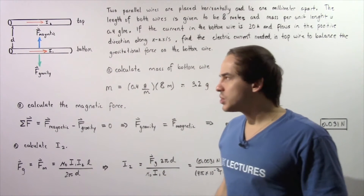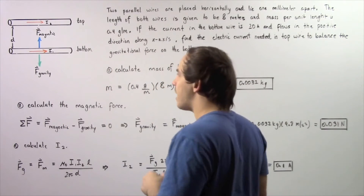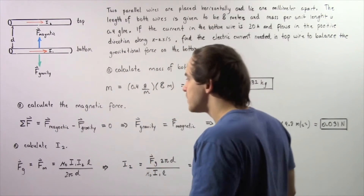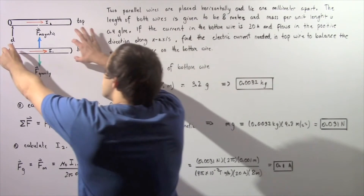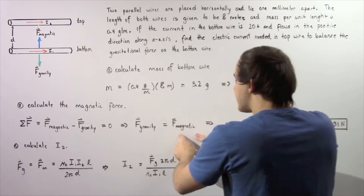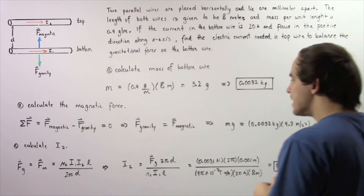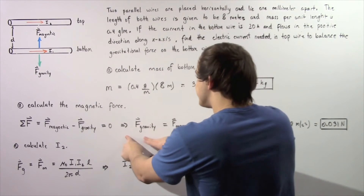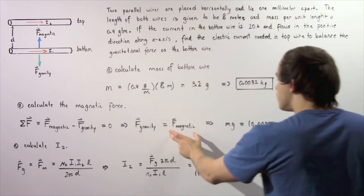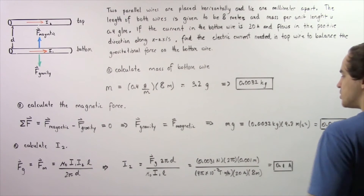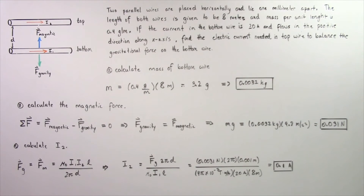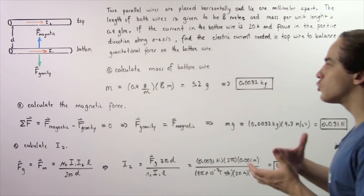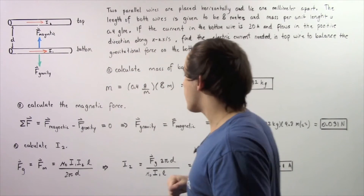In step B we use the second law of motion. The sum of the forces acting on the bottom wire along the y-axis equals the positive force minus the negative force, and that sum is equal to zero because this wire is not accelerating. So the magnetic force is equal to the gravitational force. We can solve for the gravitational force since we know the mass: the magnetic force equals m times g, which is 0.0032 kilograms multiplied by the gravitational constant 9.8 meters per second squared.